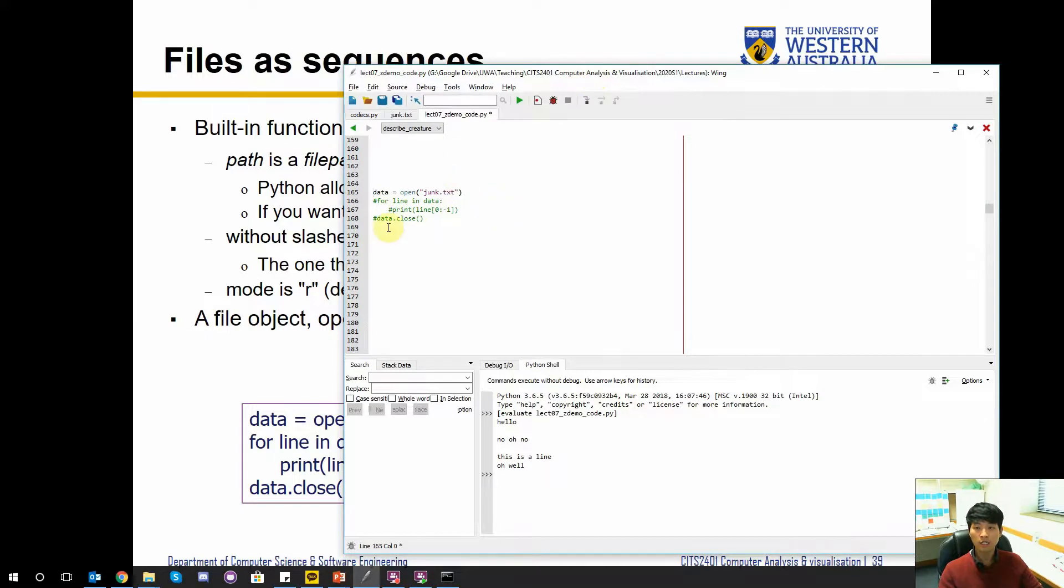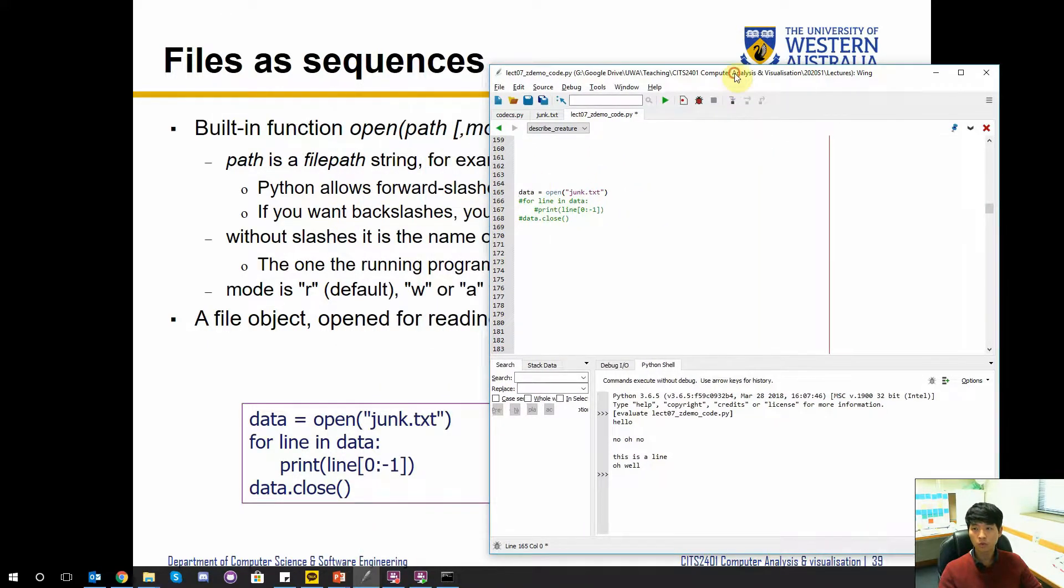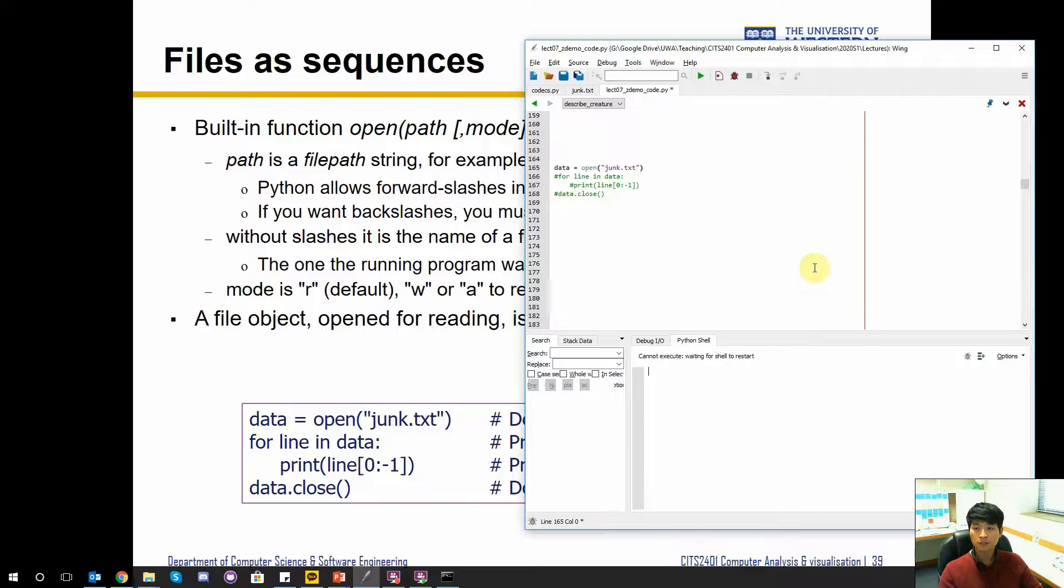Let's do one line at a time. So if I run this now I have loaded data. If I type data, it tells me that this is some text input output wrapper. This is an input output object and it has the name called junk.txt. It tells me the mode as well and it tells me some sort of encoding, but don't worry too much about that. So now we have created, opened a file.